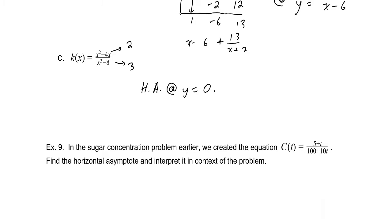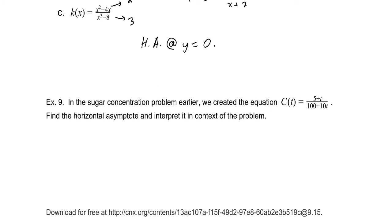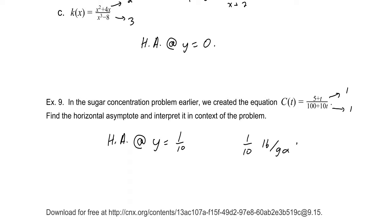Returning to our sugar concentration problem to find the horizontal asymptote: the degree of numerator is 1 and the degree of denominator is also 1, so we take the ratio of leading coefficients: 1 divided by 10. We have a horizontal asymptote at y equals 1/10. This means that as time goes to infinity, the concentration will approach 1/10 of a pound per gallon.